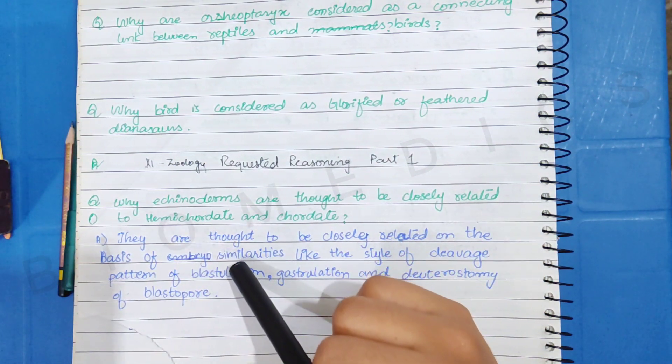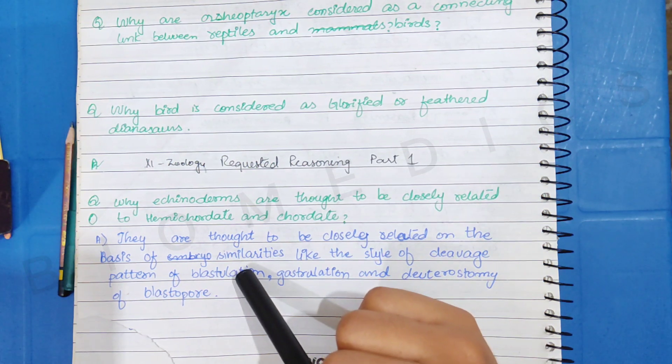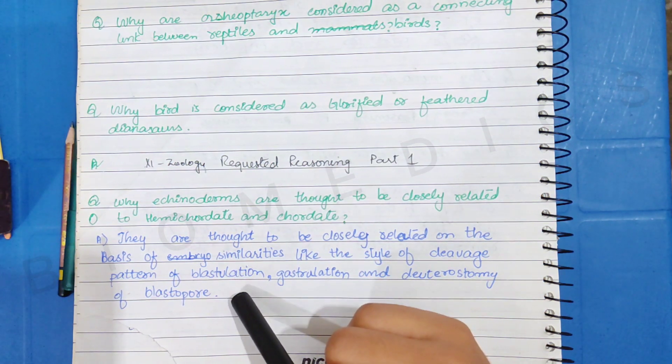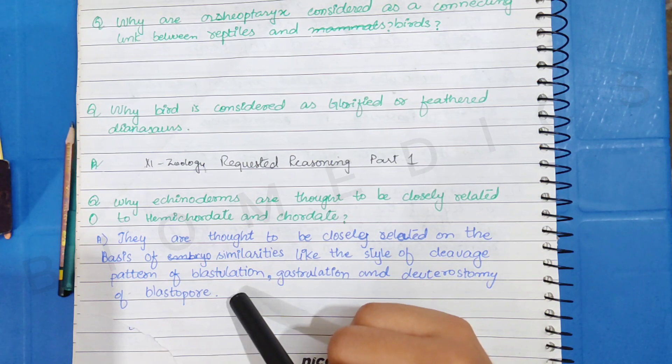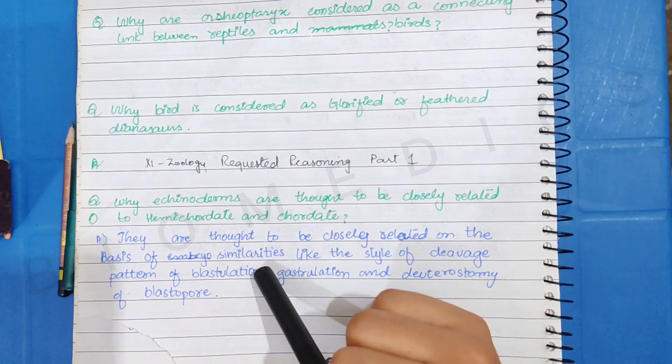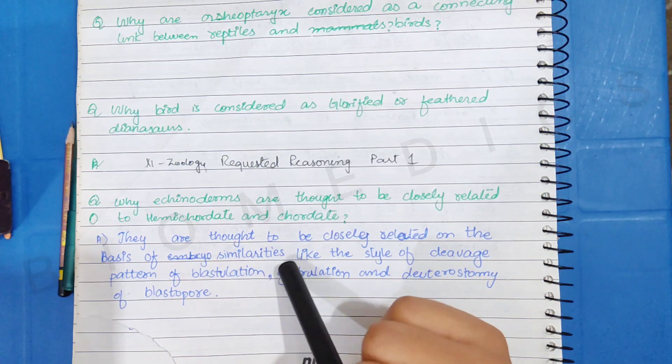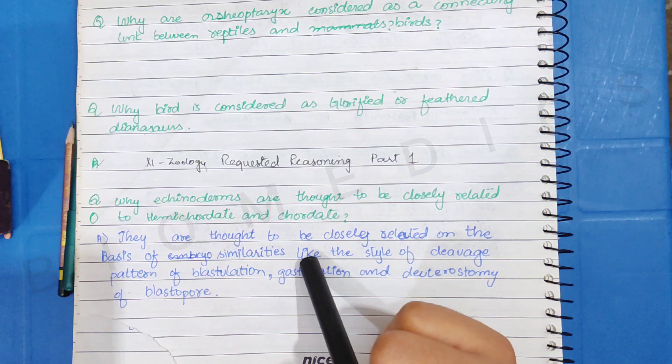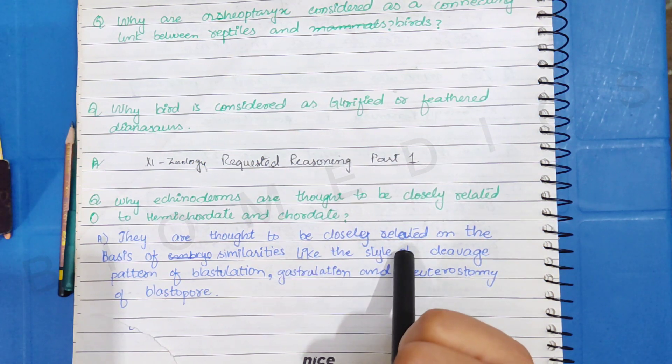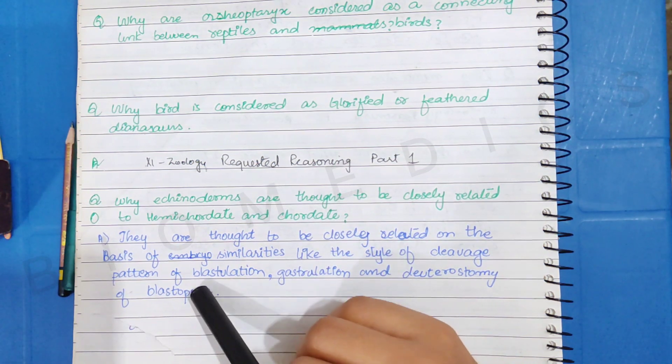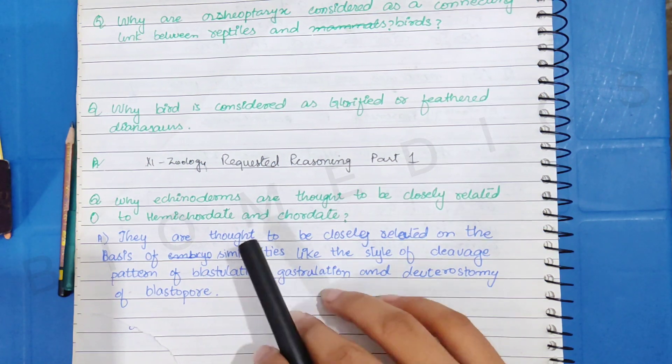This is why birds are thought to be closely related to hemichordates and chordates. You are saying that they are called hemichordates and chordates. This is why you have a reason that these are very related on the basis of embryological similarities. Because embryo's development is completely the same. And there are similarities that this is from the foundation of cleavage style. This means that blastulation is only the pattern. When you are on the site of the cycle, there are a very amount of cells which are called blastomeres.